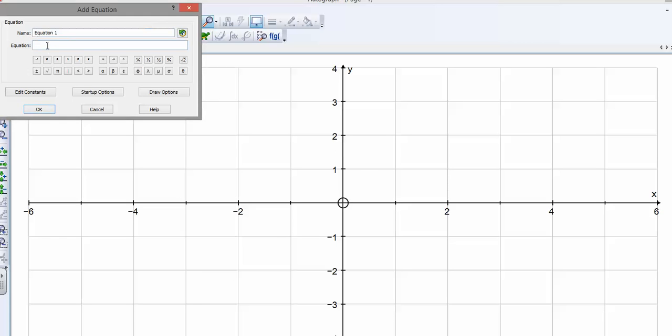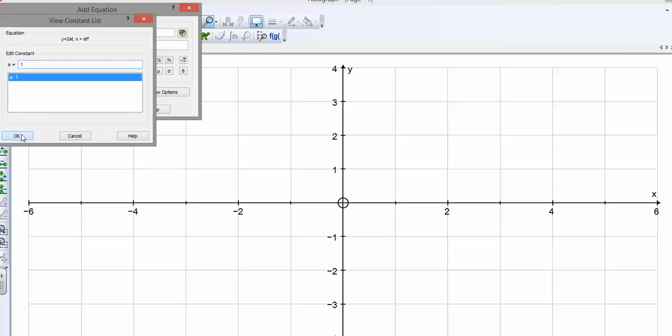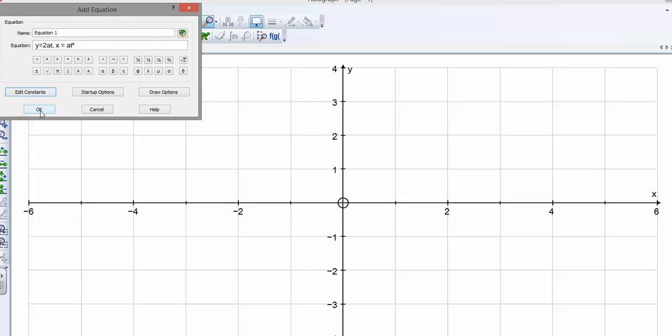Let's put in the parametric equations y equals 2at and x equals at squared. And if we start off with a is 1, let's see what that looks like.